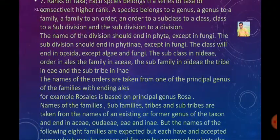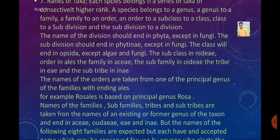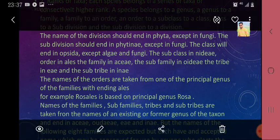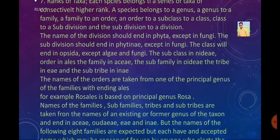Rule number 7 concerns ranks of taxa. Each species belongs to a series of taxa of consecutively higher rank: a species belongs to a genus, a genus to a family, a family to an order, an order to a subclass, a subclass to a class, class to subdivision, and subdivision to a division. The division should end in -phyta (except in fungi), the subdivision in -phytina (fungi excepted), the class in -opsida, the subclass in -idae, the family in -aceae, the subfamily in -oideae, and the subtribe in -inae.